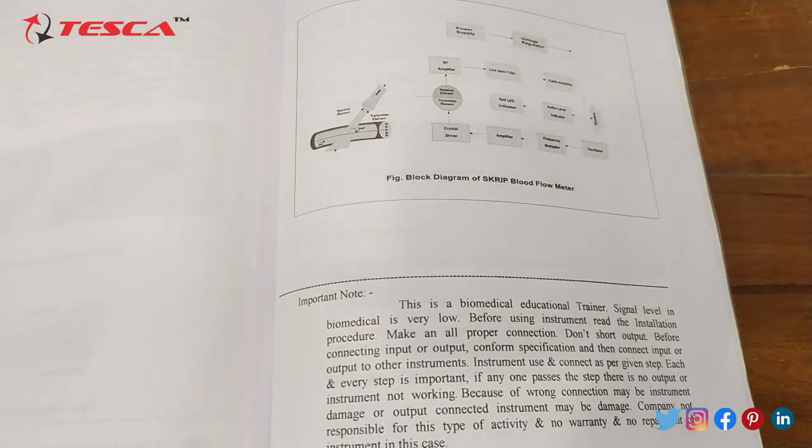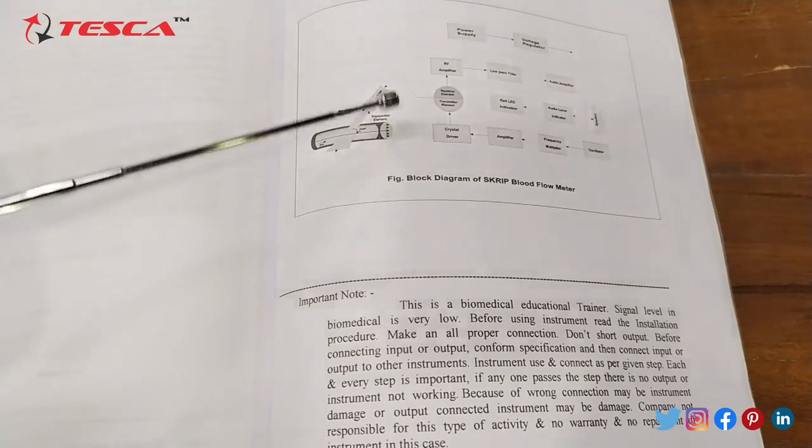Now let's see the block diagram. This is the block diagram of blood flow meter. You can see it on the manual also.